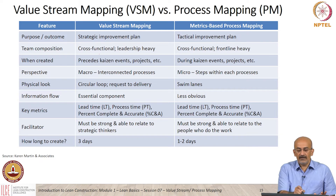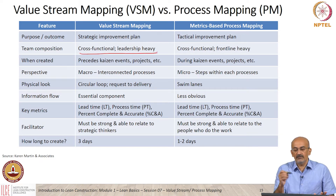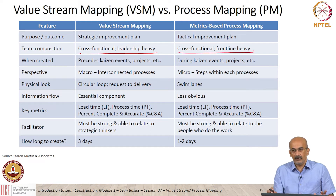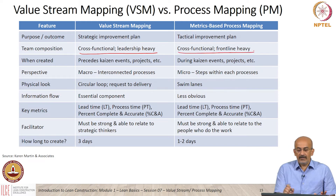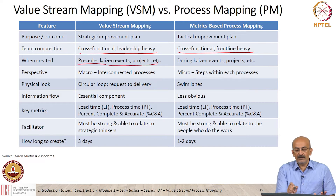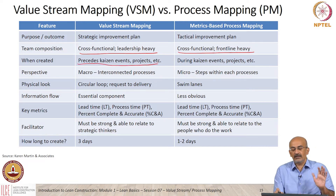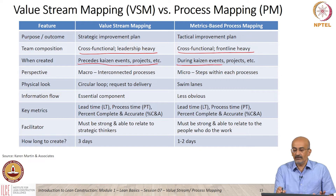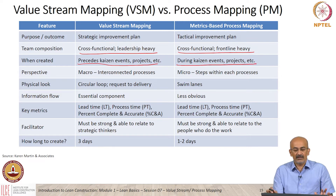A value stream map involves a cross-functional team and is more leadership oriented. A process map is also cross-functional, but frontline oriented. The value stream map precedes Kaizen events, while process map brainstorming is done during the Kaizen events.